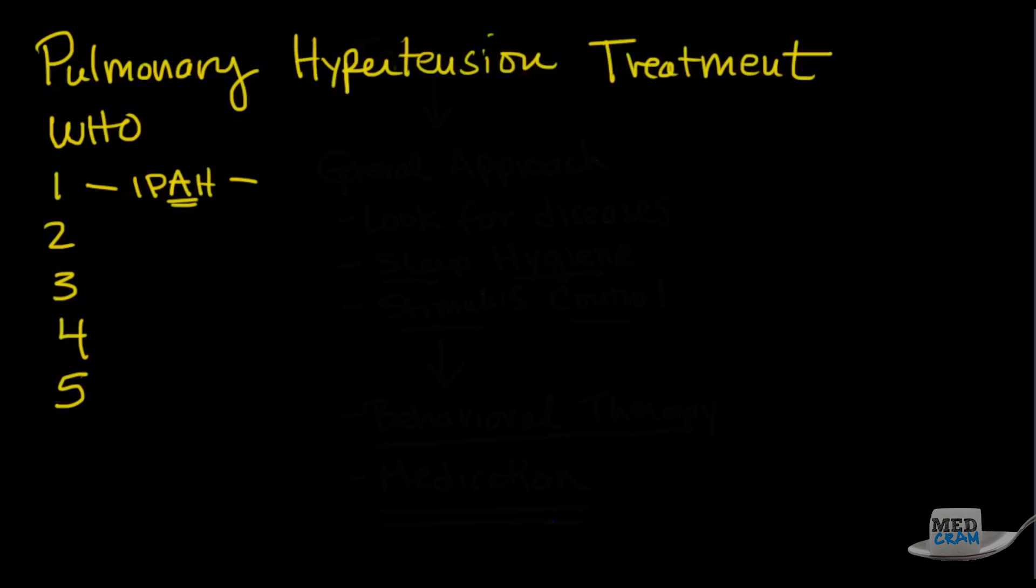Number 1 is where most of the work in terms of drugs specifically for pulmonary hypertension have centered. There's also one that is FDA approved for 4, which we'll talk about.